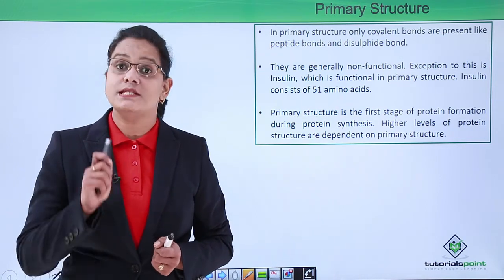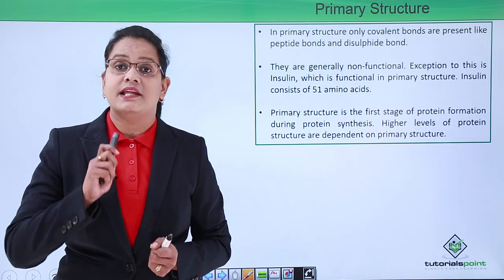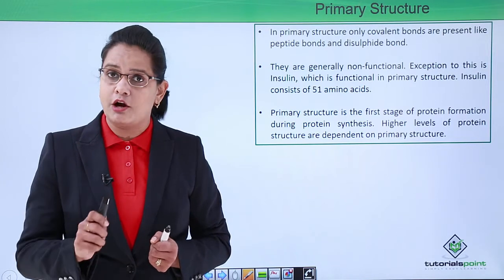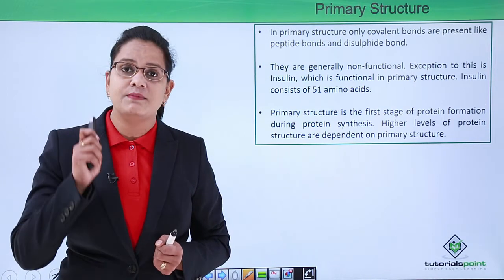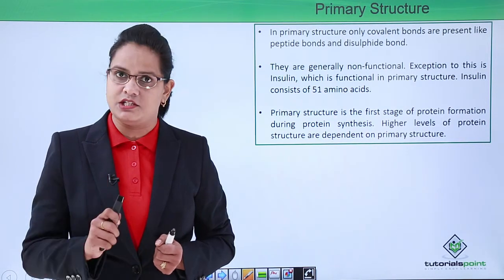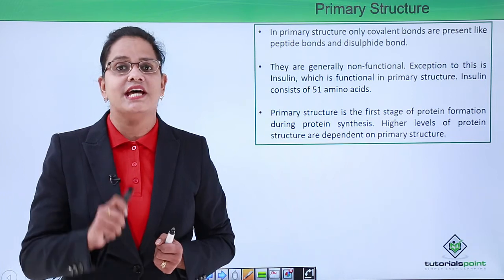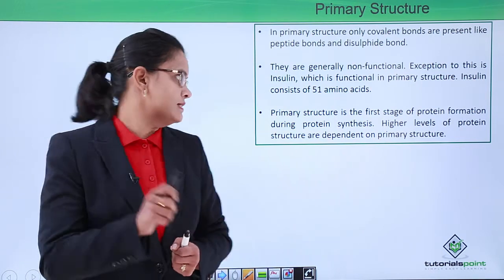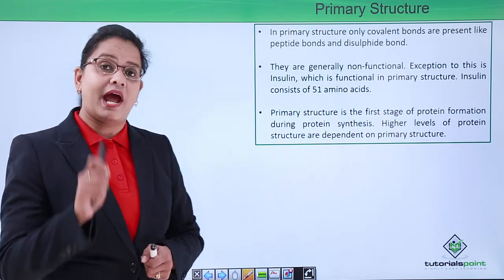The primary structure is generally non-functional, but there is an exception: insulin. The insulin hormone is functional even in the primary structure. It has 51 amino acids.